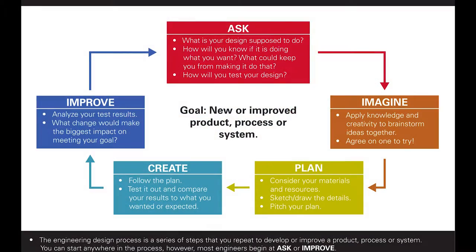The engineering design cycle is a never-ending process that promises a better solution that continues to improve as trials increase. The first step of the design cycle is to ask — by this I mean to ask questions concerning your problem, such as the constraints and what the actual problem is. In your case, look at the common problems with concrete canoes and the guidelines required to fit the competition.